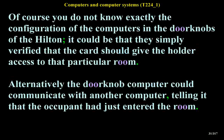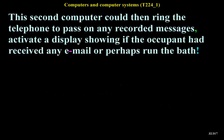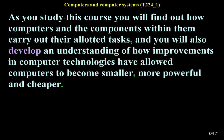Of course the exact configuration of computers in the doorknobs of the Hilton is unknown. It could be that they simply verified the card should give access to that room. Alternatively, the doorknob computer could communicate with another computer, telling it that the occupant had just entered — which could then ring the telephone to pass on messages, activate a display for email, or run the bath. As you study this course you will find out how computers carry out their tasks and how improvements in technology have allowed computers to become smaller, more powerful, and cheaper.